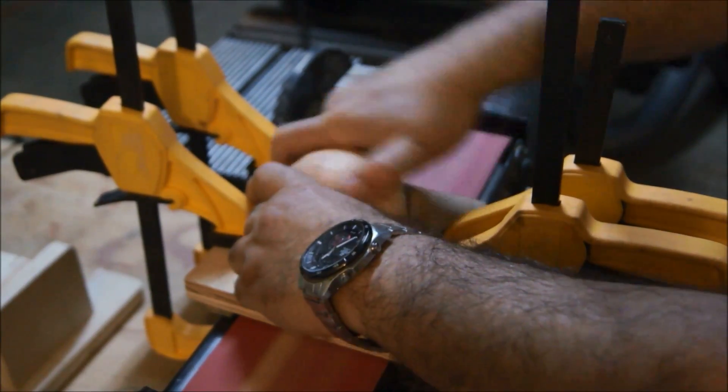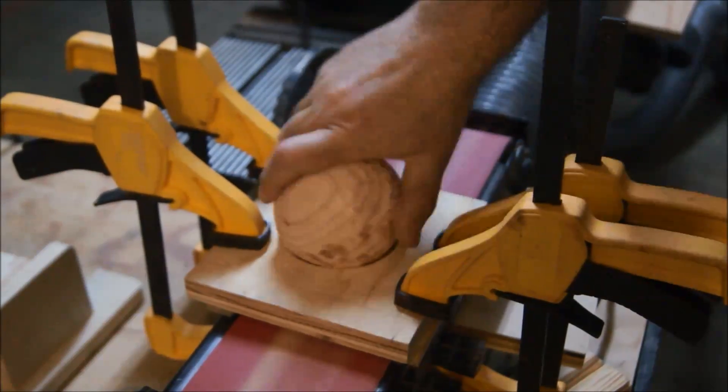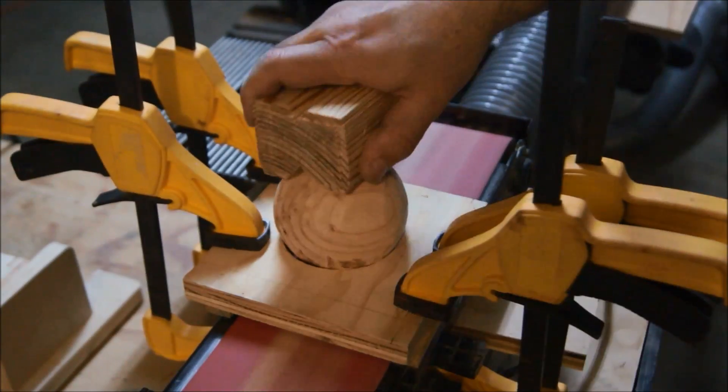Note that the plywood ball stand is raised above the belt sander with wood strips, so only the ball tip touches the sandpaper.